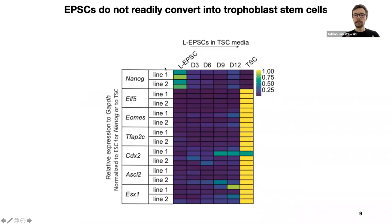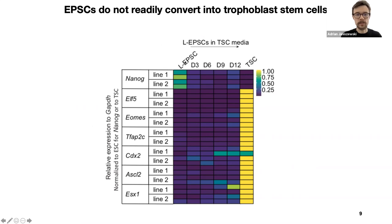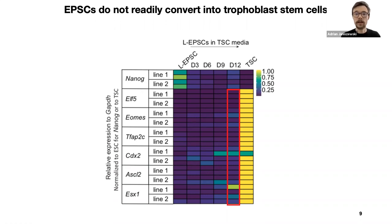The second criterion is that totipotent stem cells should have the ability to be converted to trophoblast stem cells. So we asked whether EPS cells can be converted or differentiated to trophoblast stem cells. We subjected EPS cells to trophoblast conversion and assessed the activity of key trophectoderm markers. We found that after 12 days of conversion, the EPS cells did not activate any of the assessed markers, suggesting that EPS cells cannot be readily converted to trophoblast stem cells.